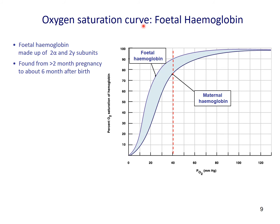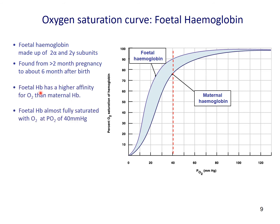The fetus has another form of hemoglobin — HbF, or fetal hemoglobin — which consists of 2 alpha chains and 2 gamma chains. Fetal hemoglobin can typically be found from 2 months of gestation to around 6 months after birth, after which almost all of it is replaced by HbA, the adult variant of hemoglobin, consisting of 2 alpha chains and 2 beta chains. We need fetal hemoglobin because it has a higher affinity for oxygen than maternal hemoglobin, so a portion of oxygen is released from maternal blood and captured by fetal hemoglobin.